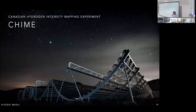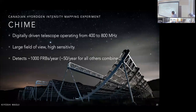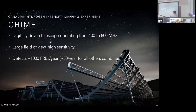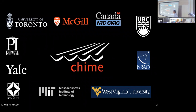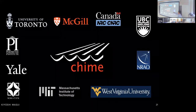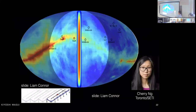Without further ado, let me introduce the Canadian Hydrogen Intensity Mapping Experiment — CHIME. It's a digitally driven telescope operating between 400 and 800 MHz, with a very large field of view and high sensitivity. It detects something like a thousand fast radio bursts per year, which is still an order of magnitude higher than all other telescopes combined. It's a collaboration between several institutions; Toronto and CITA were founding members.